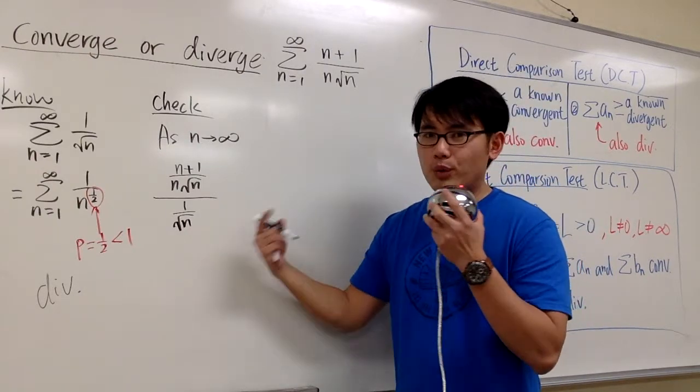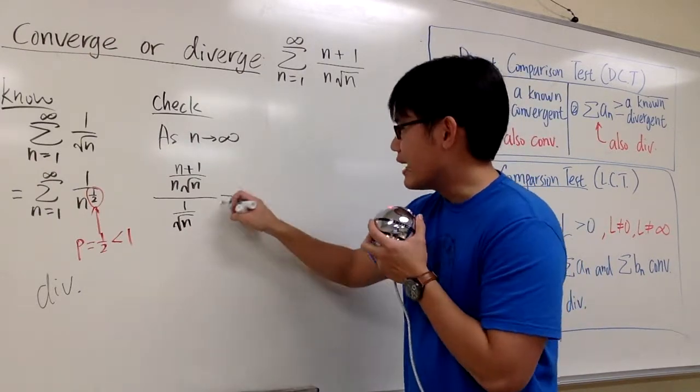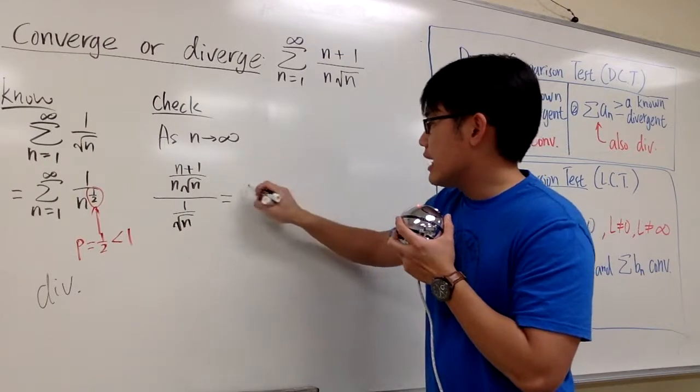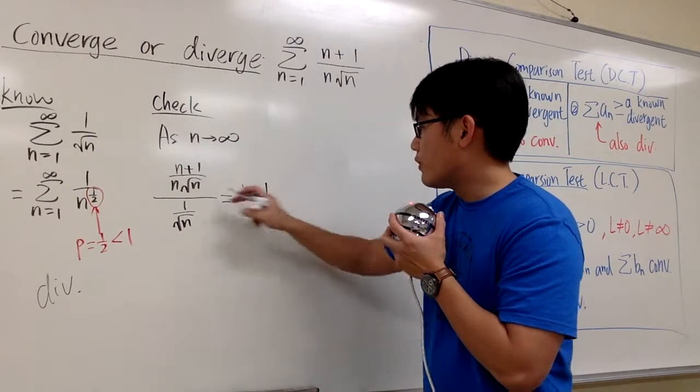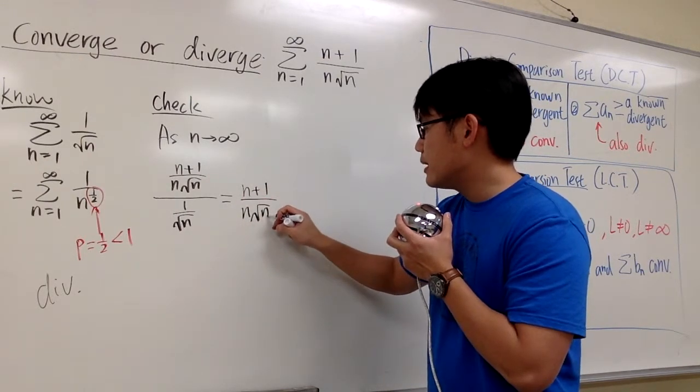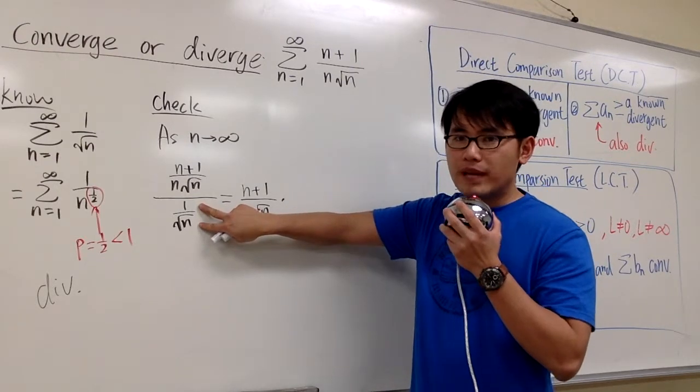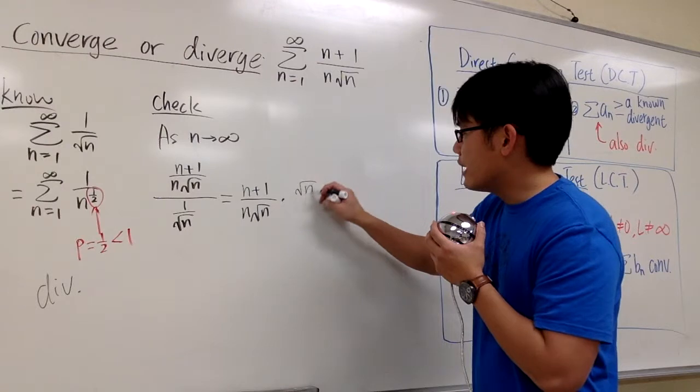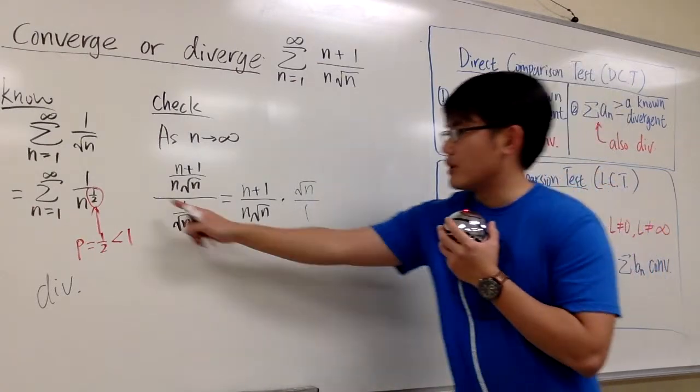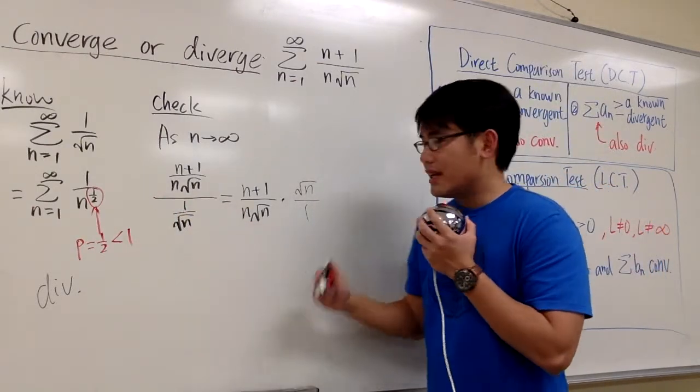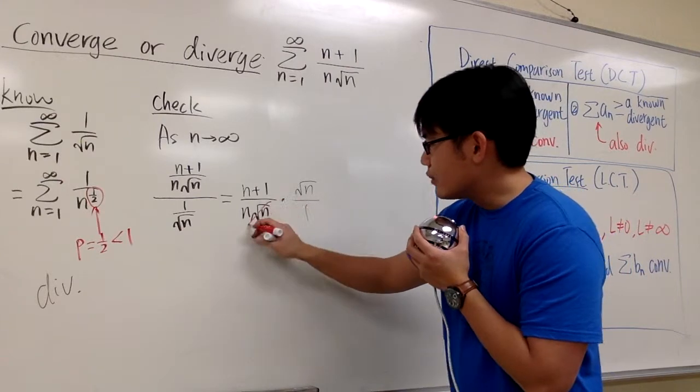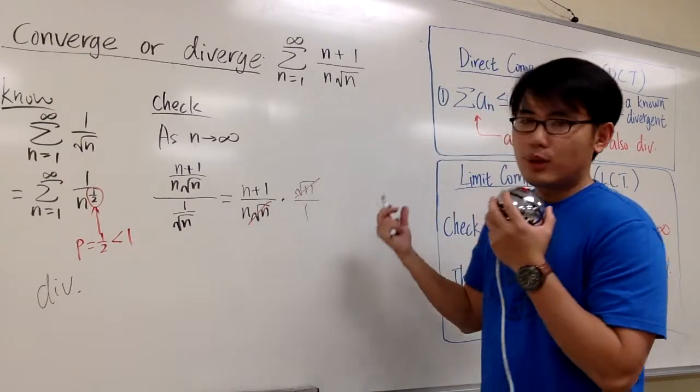This is my check. But then we have to do some algebra first. So let's go ahead. Keep this as n plus 1 over n times square root of n. But then we multiply by the reciprocal of this. 1 over square root of n becomes square root of n over 1. Because we have a complex fraction. And now as you can see, the square root of n and the square root of n cancel each other out.